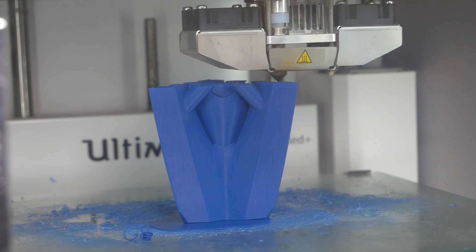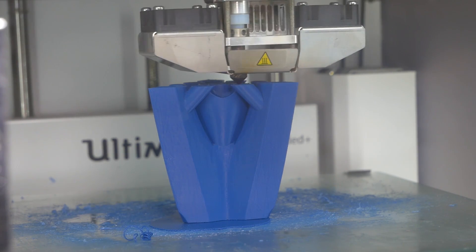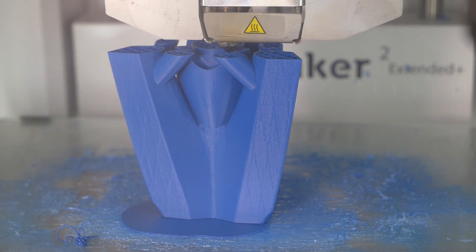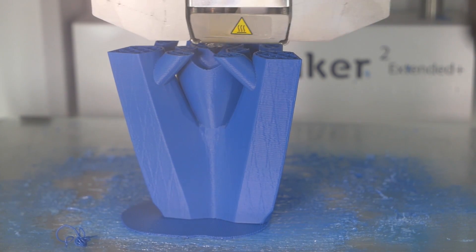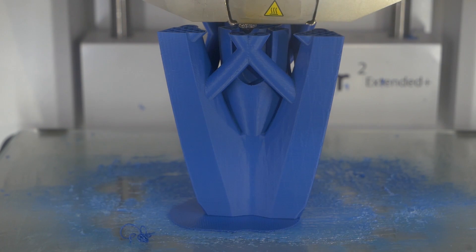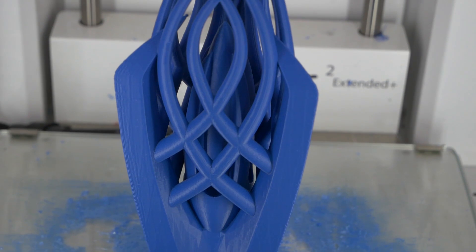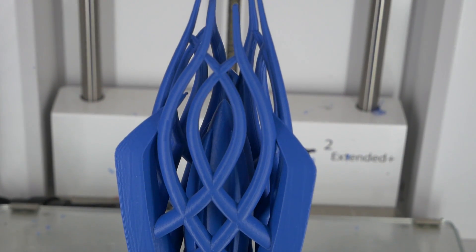We found this helps the ABS bond really well to the bed for printing, but is still easily removed when the print cools down. The staff was split into two pieces and no supports were necessary. Everything's at just the right angle so it can still print up without supports, and that was really cool to watch.